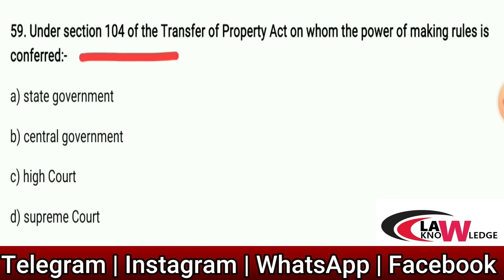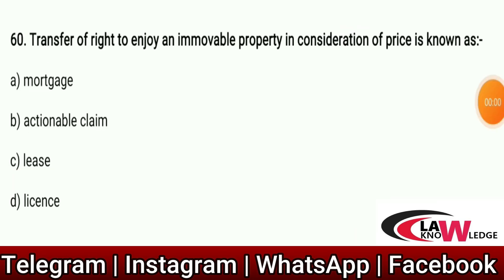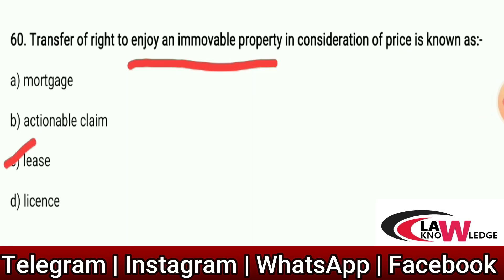Q59: Under Section 104 of the Transfer of Property Act, on whom is the power of making rules conferred? Correct answer is C — the High Court. Q60: Transfer of right to enjoy an immovable property in consideration of a price is known as — Option A: Mortgage. Option B: Actionable claim. Option C: Lease. Option D: License. Correct answer is C — Lease. Today we dealt with a total of 30 MCQs, which are very important for the Judiciary exam and have already appeared in previous prelims. Thank you.